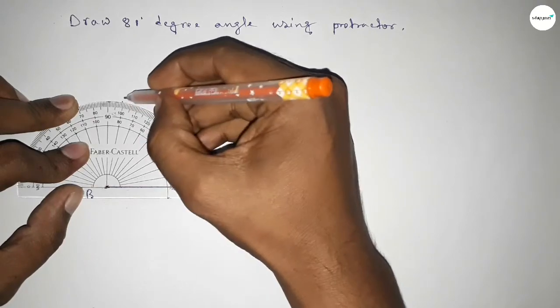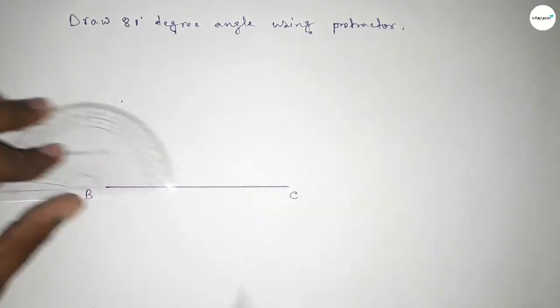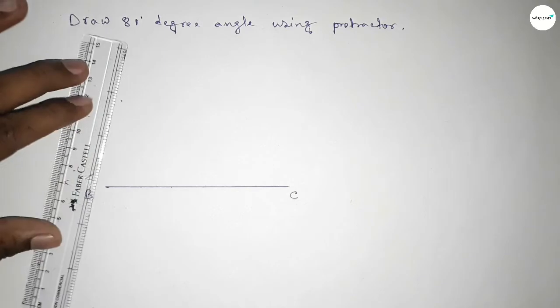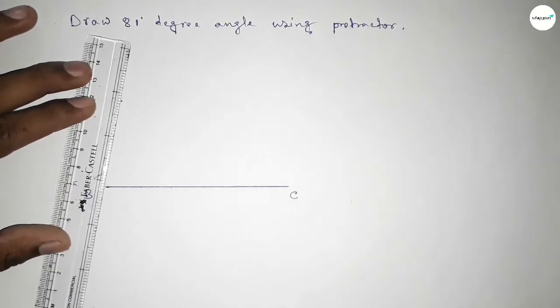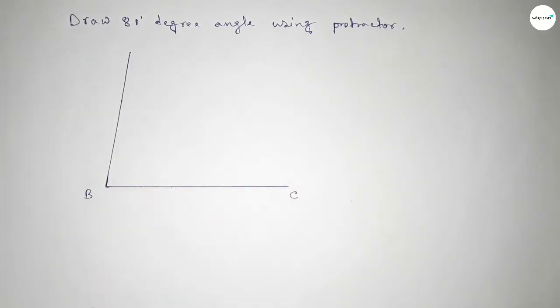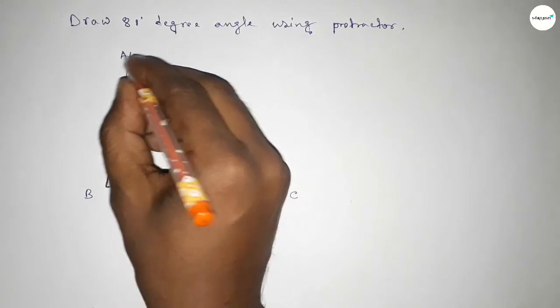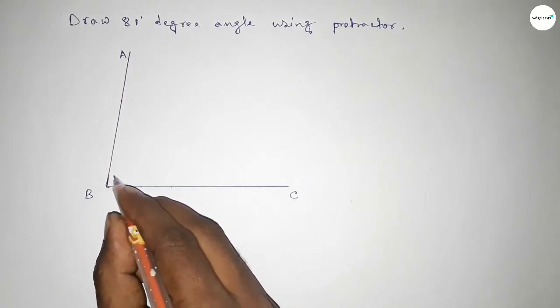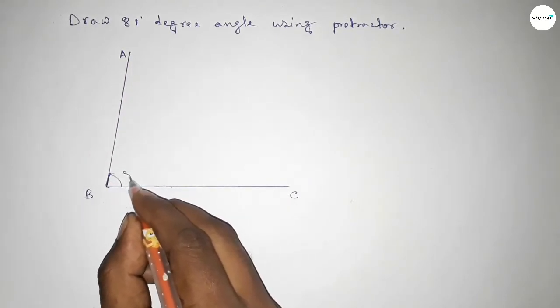And this is 81. So this is 81 degrees. Now joining this side to get an 81-degree angle. So by joining this side, we got 81 degrees, and taking here a point. So angle ABC, up to this, this is 81 degrees.